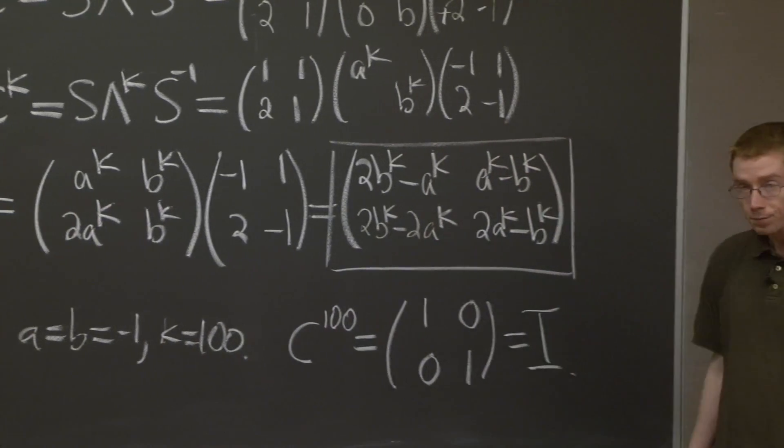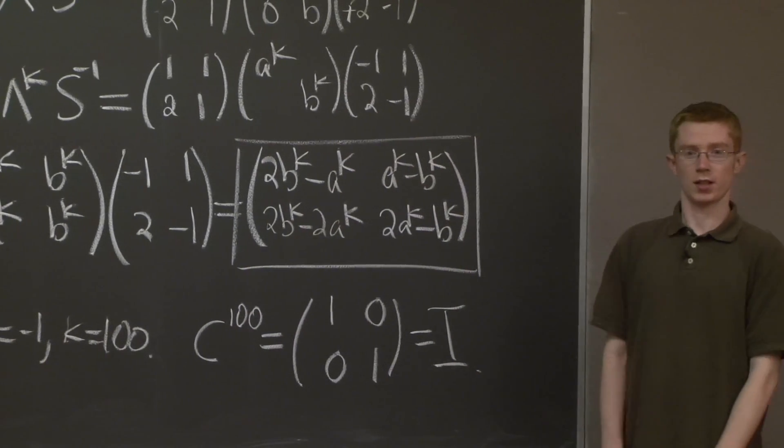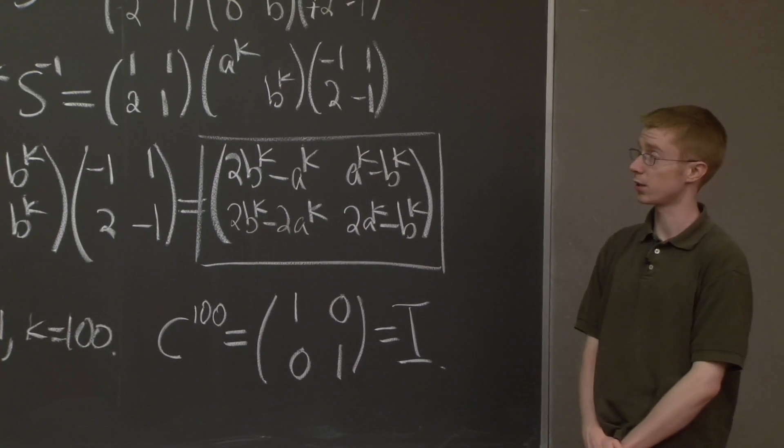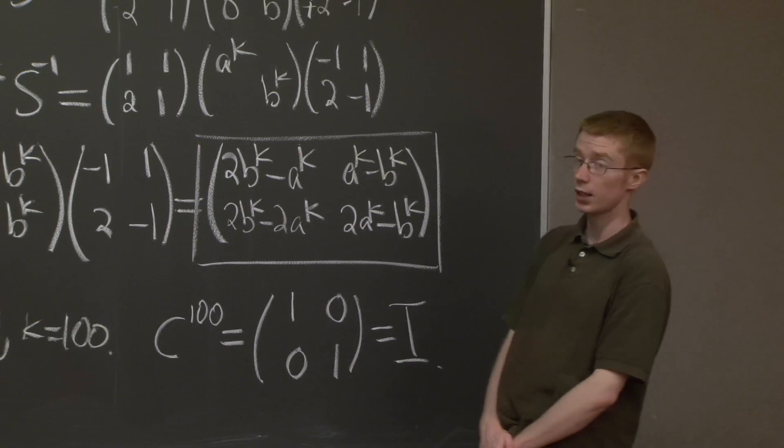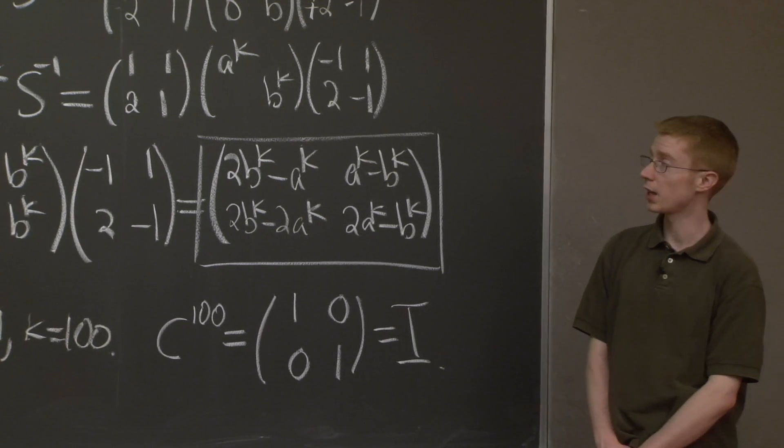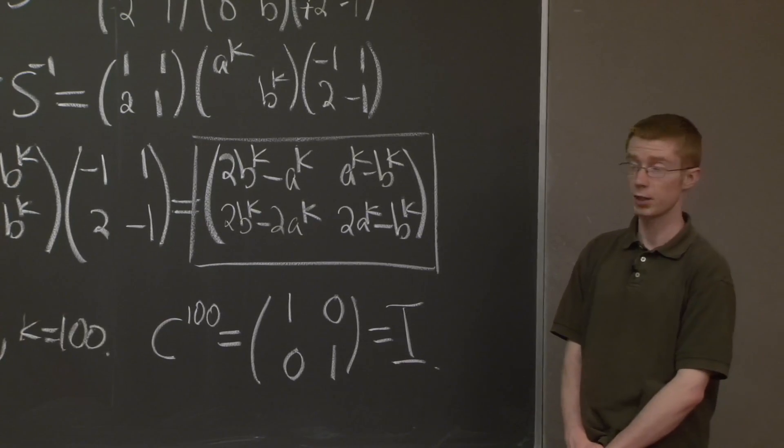Great. OK. Now to summarize, how do we take powers of a matrix? Well, first we diagonalize. We write our matrix as S lambda S inverse. And then we just take powers of the diagonal matrix.